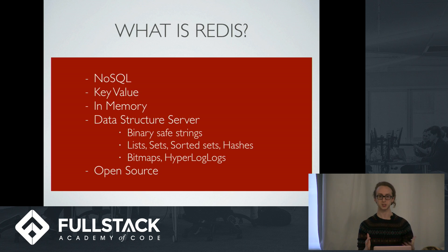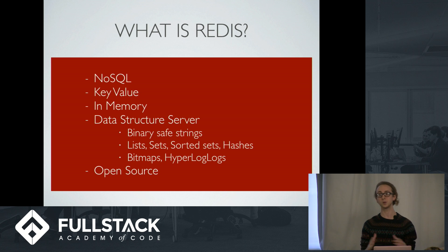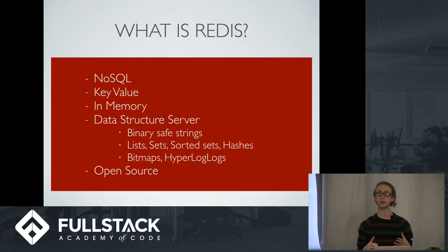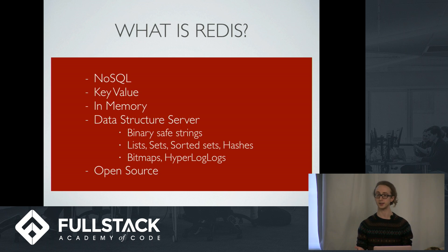It's a key-value data store, so unlike Postgres, which is table-based, or Cassandra, which is another NoSQL database that is a wide column data structure, it uses key values, which as JavaScript developers are really our bread and butter, and it has a whole ton of benefits. It is also completely in memory, which allows Redis to be incredibly performant and fast — that's most people's main reason they're interested in it. Redis does allow persistence even though it is in memory, and I'll get into how persistence works in Redis in a bit.